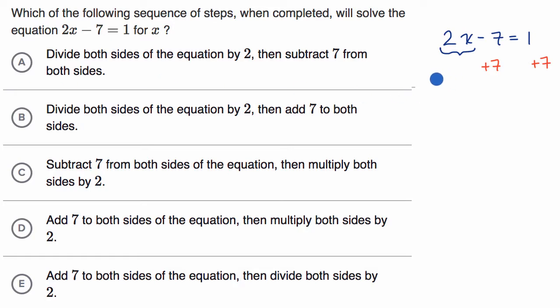Well, when we do that, our left side is left with just the 2x, because you have negative seven plus seven, is equal to the right side is one plus seven, is equal to eight.